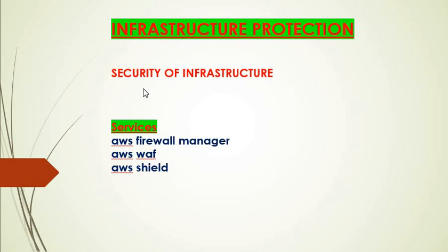Next is infrastructure protection — the security of your infrastructure including all EC2 instances, containers, ECS, and all resources running in your AWS account. The main services are AWS Firewall Manager, AWS WAF, and AWS Shield. The hierarchy is: AWS Shield on top, then AWS Firewall Manager, then AWS WAF. Using all three in combination provides better protection for your infrastructure.